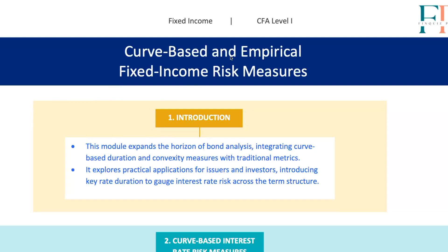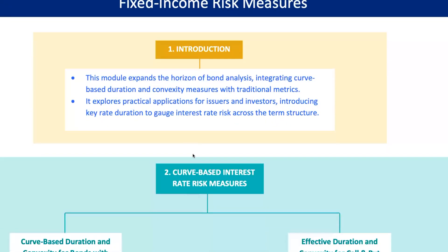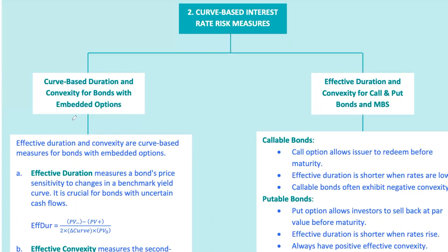Alright, future fixed income gurus, today we're diving into the deep end of bond risk and return analysis with curve-based duration and convexity measures. When we talk about bonds with embedded options — like callable and putable bonds, or even mortgage-backed securities (MBS) — traditional duration and convexity just don't cut it, because these bonds have cash flows that can change depending on interest rates. So let's explore how effective duration and effective convexity give us a better handle on these complex instruments.